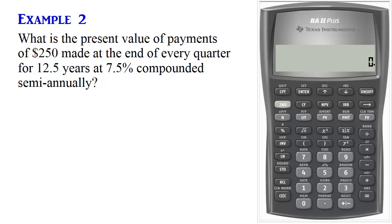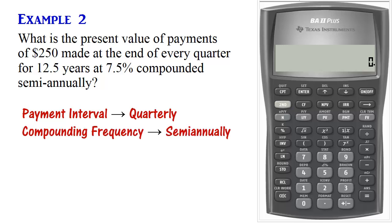So in this case, we see that payments are made quarterly, but the interest rate is compounded semiannually. Payment interval and compounded frequencies are different. So we call this general annuity.